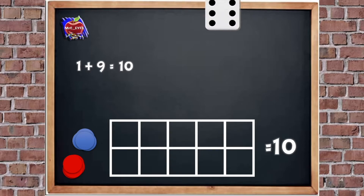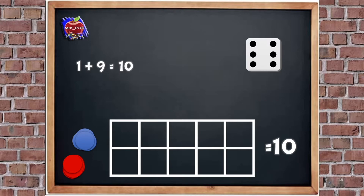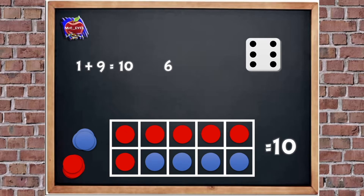Let's have another go. We're going to roll the dice again. How many have we got? Yes, six. Well done with subitizing that. So I'm going to put six counters into my frame: five, six. So I'm going to put six up there and I need to put four counters in: one, two, three, four. So it says add four. We've got six add four. What does it equal altogether? Yeah, ten, because it's a tens frame and it's full. So our number sentence reads six add four equals ten.